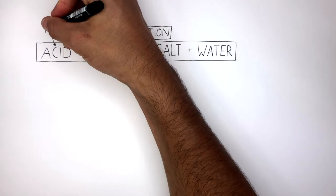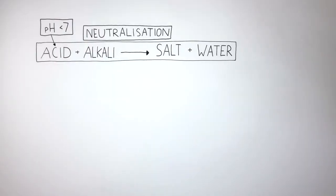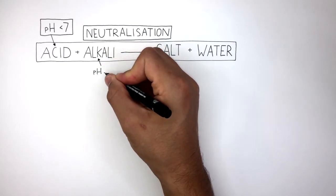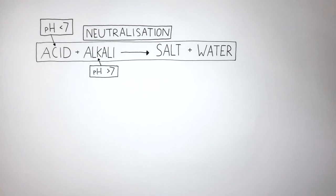An acid always has a pH below 7, whereas an alkali always has a pH above 7. So when an acid and an alkali react, they form a neutral solution of a salt and water, which has a pH of 7 exactly.